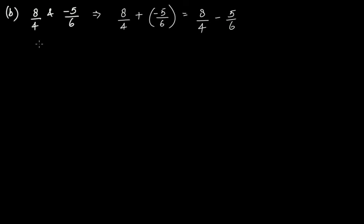Now if you take LCM of 4 and 6, you get 12. So this is 12: 4 times 3 is 12, so 8 times 3, minus 6 times 2 is 12, so 5 times 2. So you get 24/12 minus 10/12.